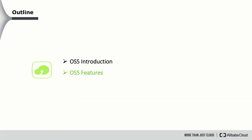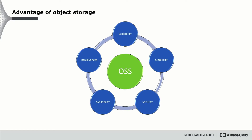Let's move to the OSS features. OSS provides scalability, simplicity, security, availability, and inclusiveness. For scalability, OSS provides massive volume up to 50 petabytes for a single bucket, and it provides a massive number of objects — in fact, there is no limit on the number of objects.